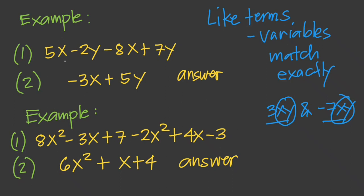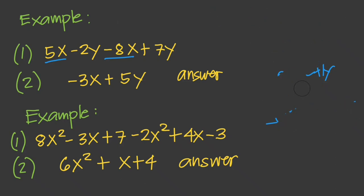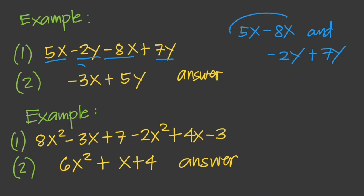Given 5x minus 2y minus 8x plus 7y, we combine like terms. The like terms are 5x and negative 8x, and also negative 2y and 7y. Combining 5x minus 8x gives negative 3x, and negative 2y plus 7y gives positive 5y. So our final answer is negative 3x plus 5y.